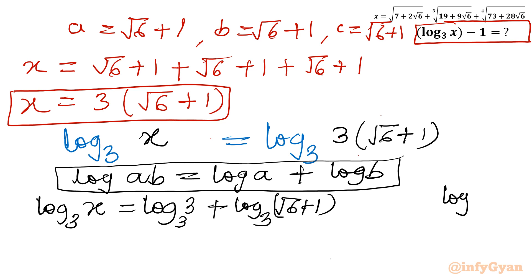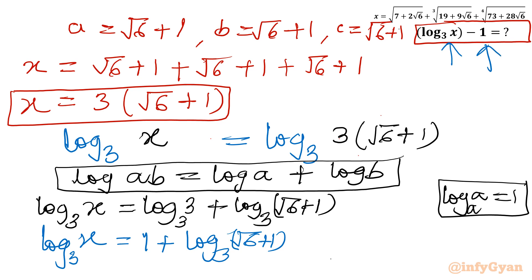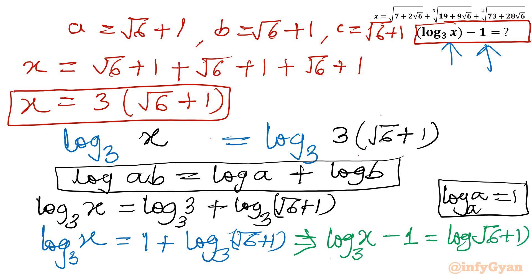Since log base 3 of 3 equals 1, we have log base 3 of x equals 1 plus log base 3 of (root 6 plus 1). Taking 1 away from both sides gives our final expression: log x base 3 minus 1 equals log (root 6 plus 1) base 3. This is our final and perfect answer.